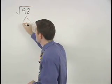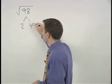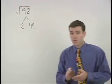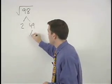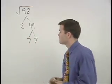98 is 2 times 49, and if you know your perfect squares you'll recognize 49 as 7 times 7.